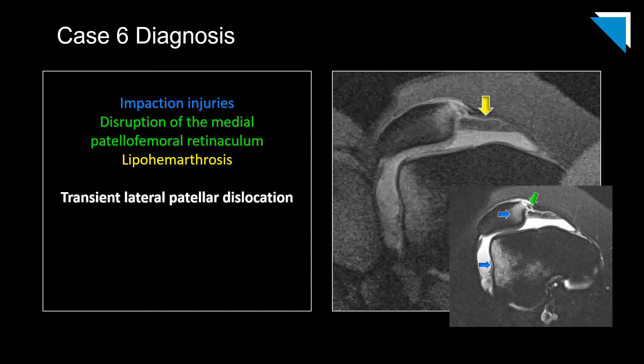The impaction injuries occur when the patella moves back into its normal position and impacts against the lateral femoral condyle. The retinaculum injury results from stretching during the dislocation itself. It's always important to look for these mechanisms of injury and report them whenever possible. My impression is simply 'sequelae of recent transient lateral patellar dislocation' — the orthopedic surgeons will always know what findings to look for in the body of the report.